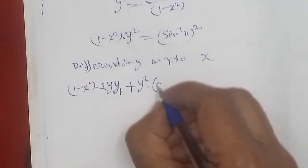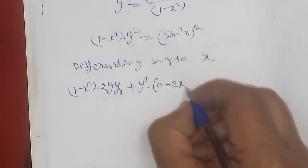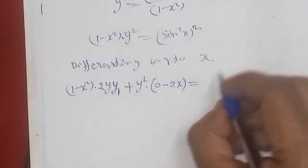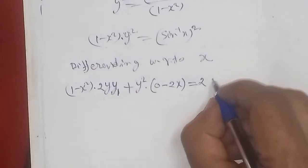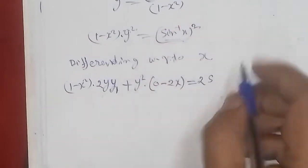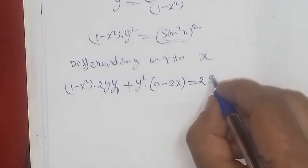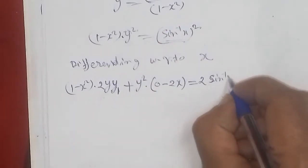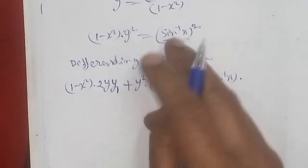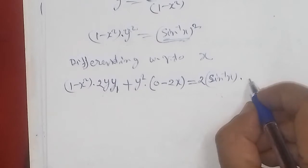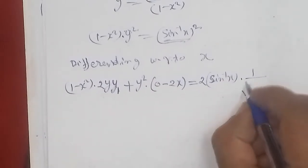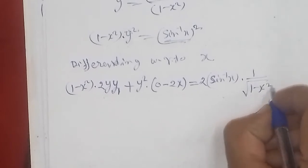The differentiation of 1 becomes zero, and differentiation of x square becomes 2x. On the right hand side, the power comes down. The differentiation of x square is 2x, so the power reduces to 1. But since it is not just x, we differentiate again. And sin inverse x differentiates to 1 upon square root of 1 minus x square.